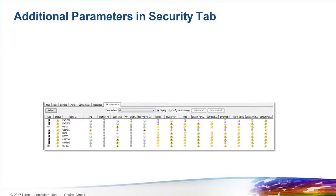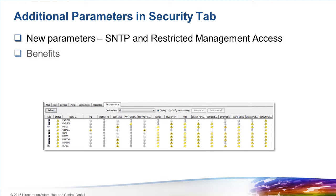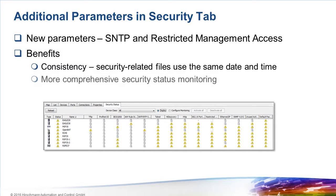The Security tab was first introduced in version 6 of Industrial HiVision. The response from users was very positive. The purpose of the Security tab is to identify unsecure network infrastructure devices — for example, switches with unsecure protocols like Telnet or HTTP enabled, or devices which are still using the default password, or firewalls configured to allow all data traffic through. The Security tab already provided a very good overview of the security status of a network.